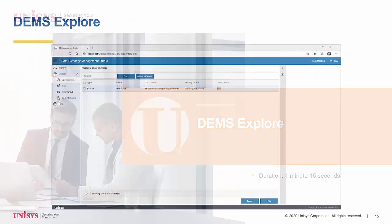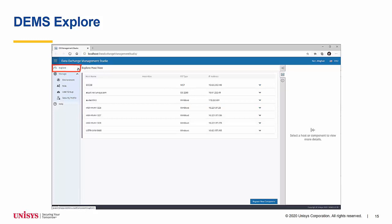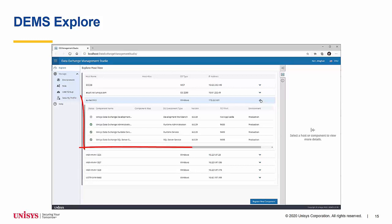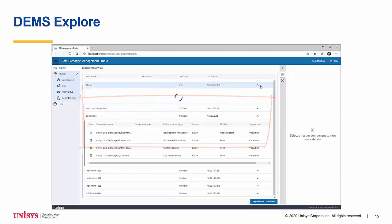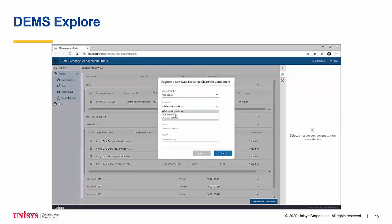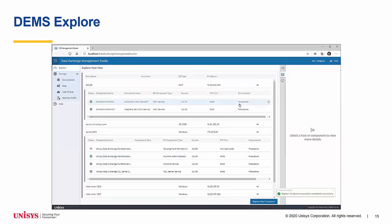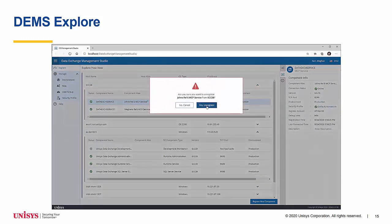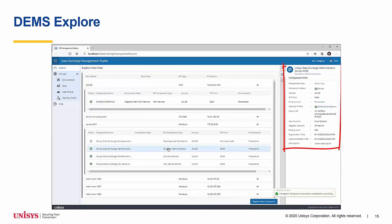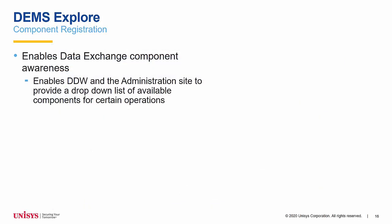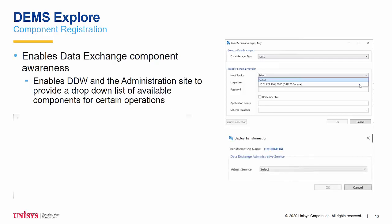DEMS Explore. The new DEMS Explore option allows you to quickly see all your Data Exchange components at a glance. All Windows components are automatically registered during installation, and users can manually register and unregister the MCP services and OS 2200 services. The DEMS Explore option enables a user to view various properties of each component and include an alias and description for each Data Exchange component. Users can see when a component was registered and more. Having each component registered with DEMS enables Data Exchange to provide a drop-down list of available components for schema loading, transformation deployment selection, and more.